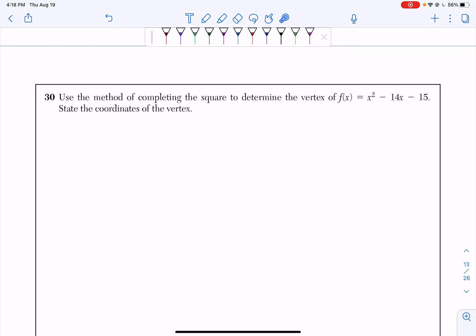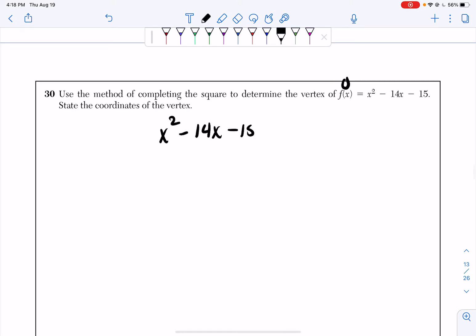So what we're going to do is we're going to basically set this function equal to 0. So I'm going to have x squared minus 14x minus 15 equal to 0. So whenever we complete the square, the first thing we're going to want to do is get all of our x's on one side and our numbers on the other.